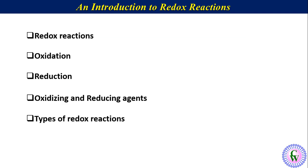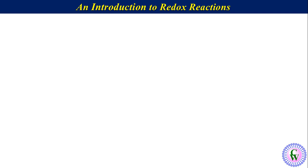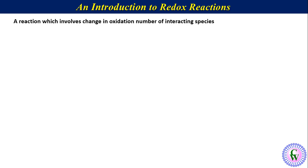Let's start with the definition of redox reactions. A redox reaction is defined as a reaction which involves change in oxidation number of interacting species. For example, the reaction of copper sulphate with zinc metal to produce copper metal and zinc sulphate.